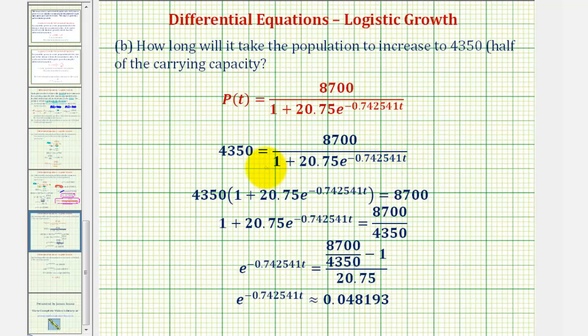The first step is to clear the fraction by multiplying both sides by this quantity. Then to solve for the exponential, we divide by 4,350. This is actually just 2. Then we subtract 1 and divide by 20.75. This quantity comes out to approximately 0.048193.